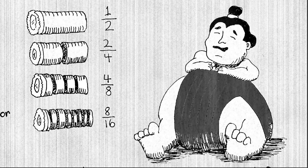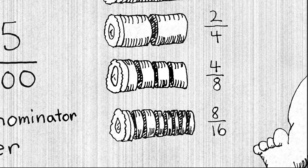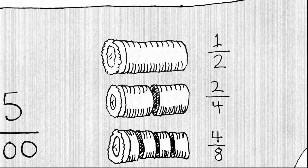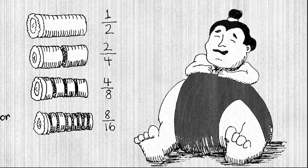Another interesting thing about fractions — we can learn from our very full sumo wrestler friend. I had one whole sushi roll, cut it in half, and gave the sumo wrestler one-half. With the half I kept, I cut it in half again, giving me two-fourths. Then I cut each of those fourths in half again, giving me four-eighths. Then I cut all those in half again, giving me eight-sixteenths. So I have four different fractions — one-half, two-fourths, four-eighths, eight-sixteenths — and they're all equal to the same amount. When I kept chopping the sushi, I didn't give more sushi to the sumo wrestler; it's the exact same amount, just cut into smaller pieces. Two fractions can have very different numbers but represent the same value.